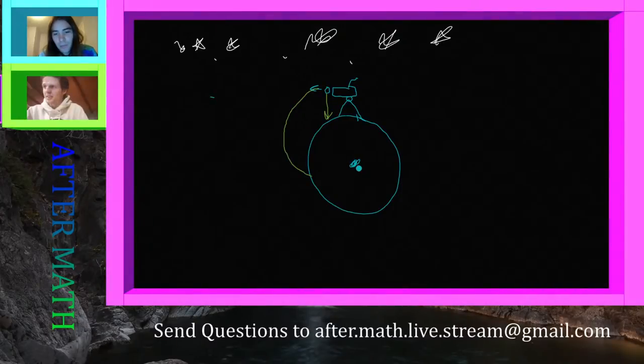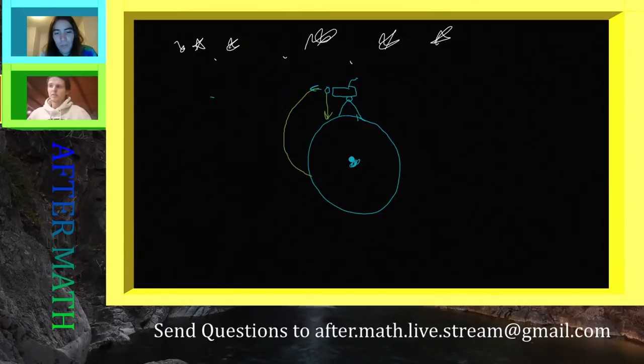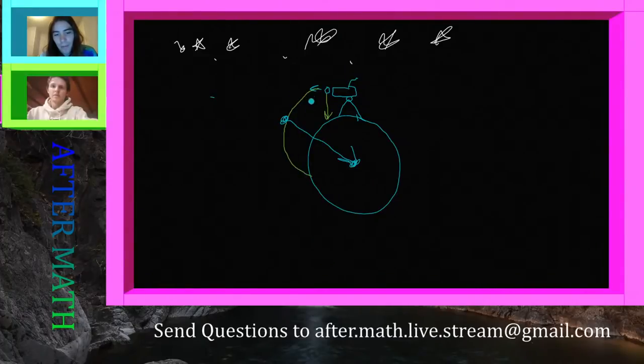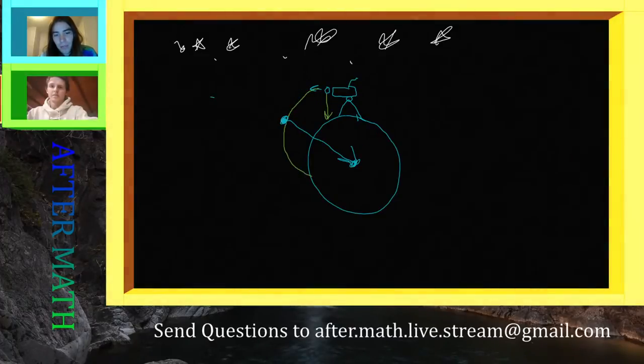Okay. So like you said, the force of gravity. The force of gravity is from the center of the earth or whatever mass we're talking about, and it is always going to be pulling directly in. So if we take this point here, the force of gravity would be taking this cannonball and pulling it in right there, right towards the center. But at the same time, this cannonball is moving in a direction, right?